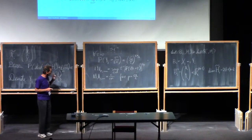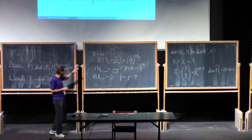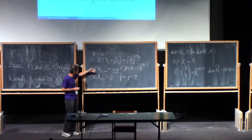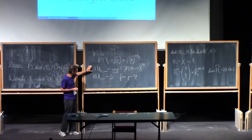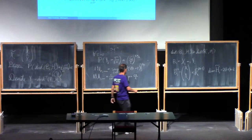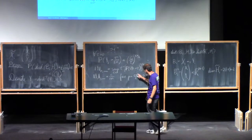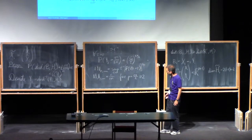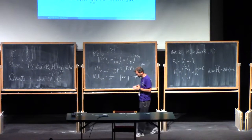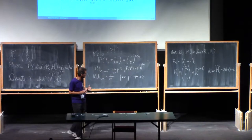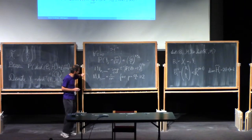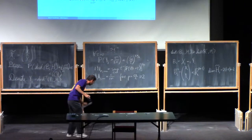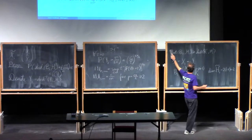For all weak LP spaces with p greater than one, there is a real Banach space norm which is equivalent to this quantity. Moreover, if we consider p greater than or equal to 2, which we can afford, then the coefficients of this equivalence are independent of p. So we can treat it like the Banach space norm.